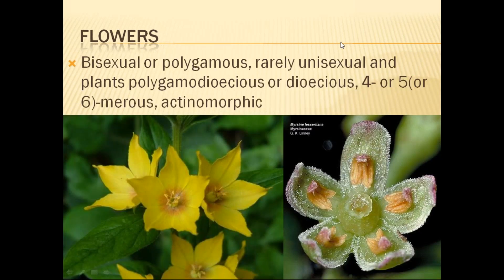The flowers have a very particular structure seen in this family. They are generally bisexual and polygamous, and the plants are polygamodioeciuos. Polygamodioecious means androecium and gynoecium are both present in a particular flower. Two to three numbers of carpels or ovaries may be present. The flowers are generally tetramerous or pentamerous and actinomorphic with radial symmetry.